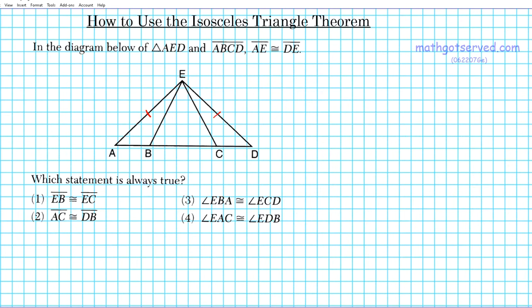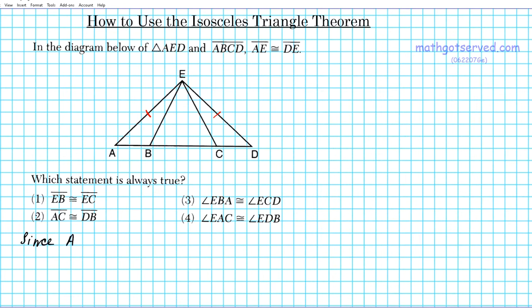I'd like us to take a look at that bigger triangle for a second. If you look at that bigger triangle, you have a situation where two sides are congruent. Any triangle that has two congruent sides is known as an isosceles triangle. Since segment AE is congruent to segment DE, it follows that triangle AED is an isosceles triangle.